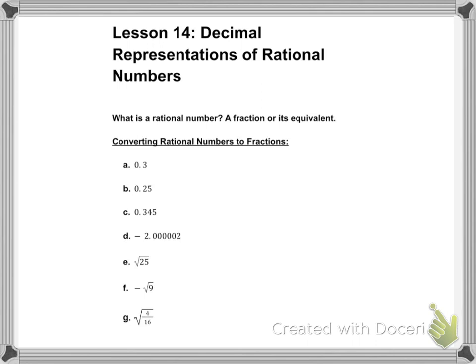When we are converting rational numbers to fractions and we're looking at decimals, one of the easiest ways to do it is to say the decimal number out loud. For example A, the decimal number has one place after the decimal, which is the tenths place. So when I say this, I would say it as three tenths. So the three would go in the numerator and the ten would go in the denominator.